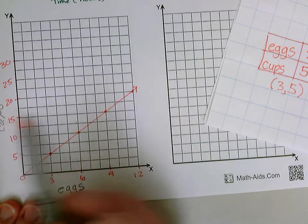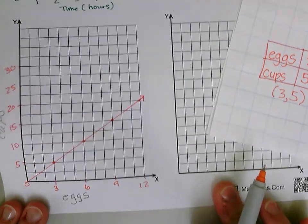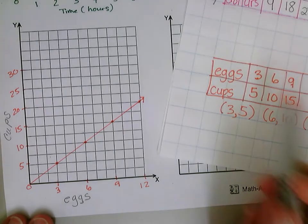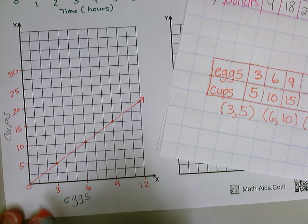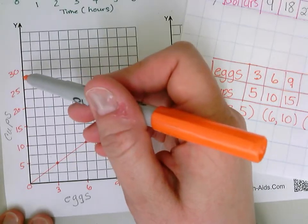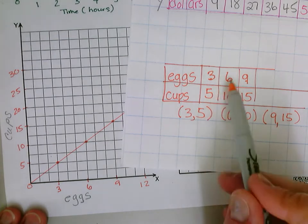That's how we would graph our ratio table. We'd make a scale for our x-axis, we'd make a scale for our y-axis, and then we would make ordered pairs from our equivalent ratios.